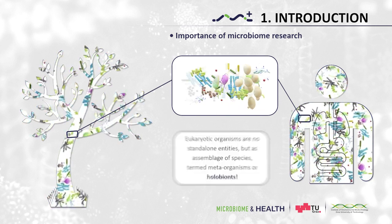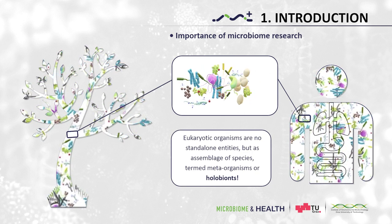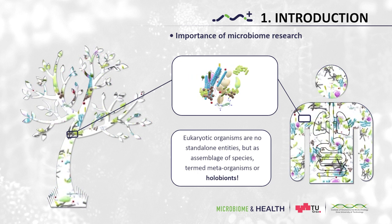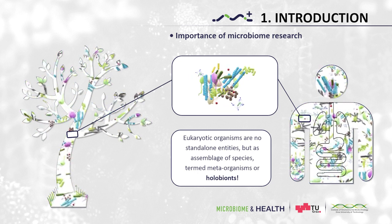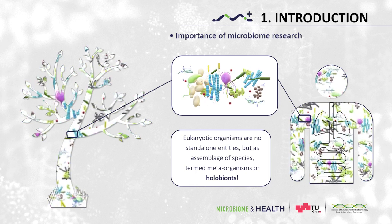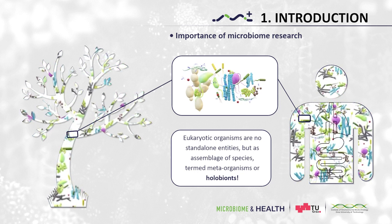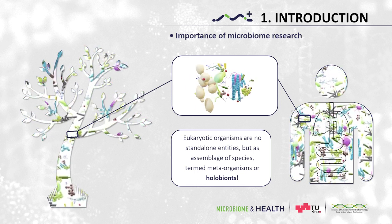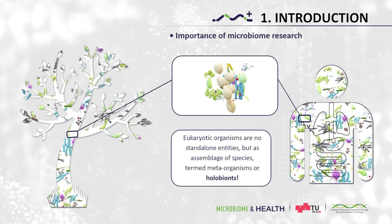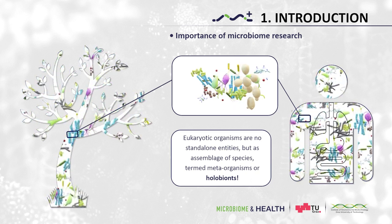Another example is eukaryotes themselves. Mitochondria and plastids are organelles within eukaryotic cells that are derived from endosymbiotic bacteria and that, throughout co-evolution, have become entirely dependent on their hosts and vice versa, which is known as the endosymbiont's theory. Host-microbe co-evolution is important to consider in order to facilitate a holistic understanding of the microbiota.